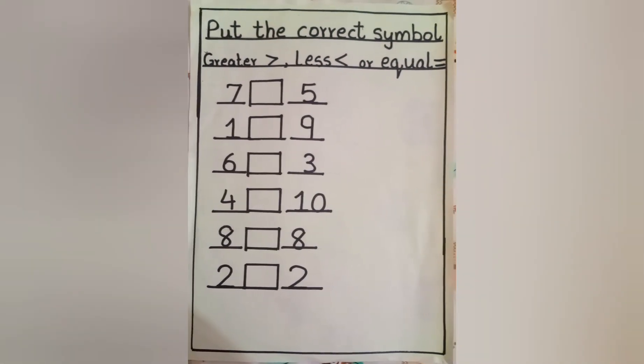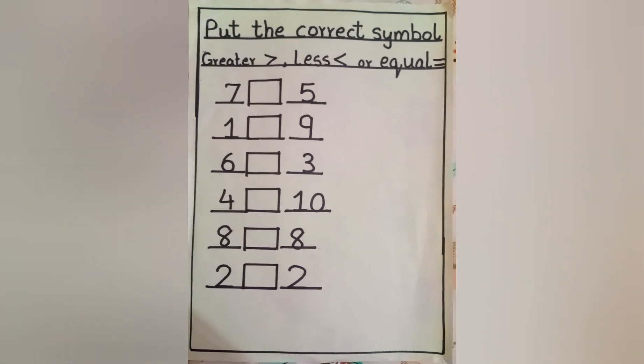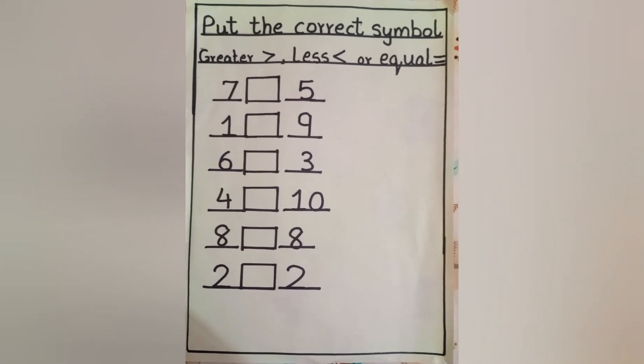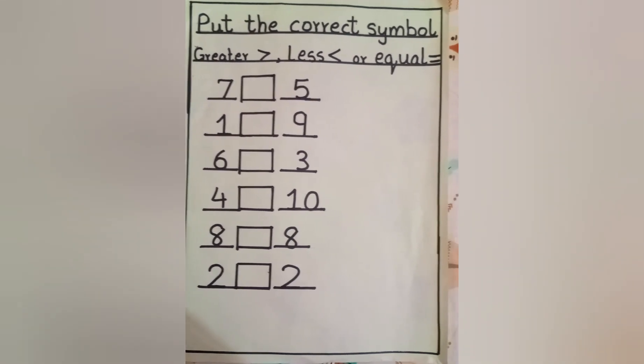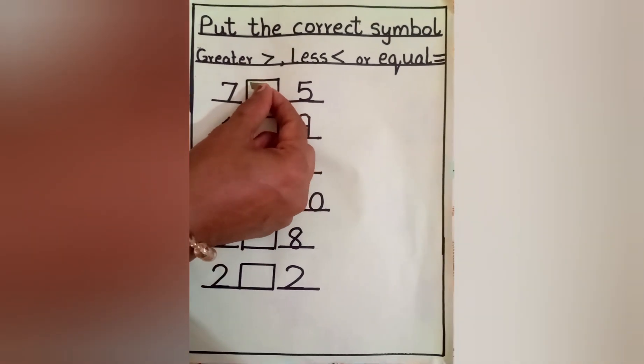Now tell me which number is greater? Seven number or five number? Very good. Seven number is bigger number. Now crocodile will eat number seven. Yum yum yum.